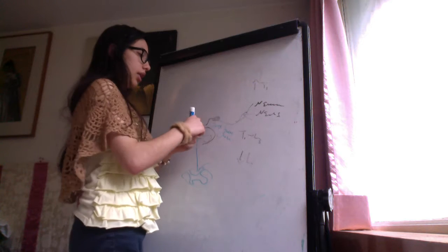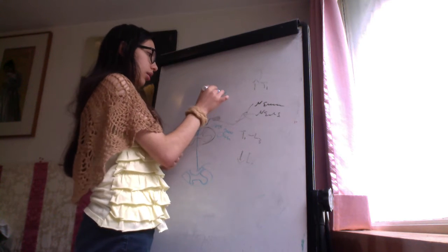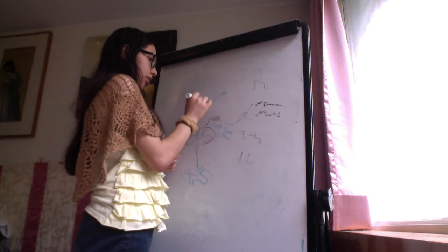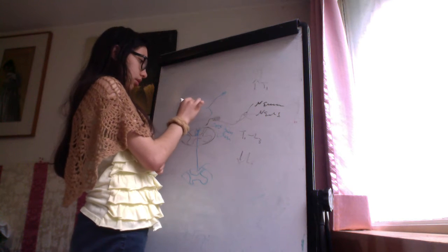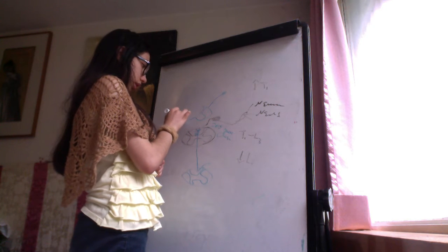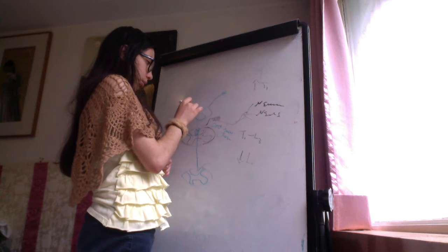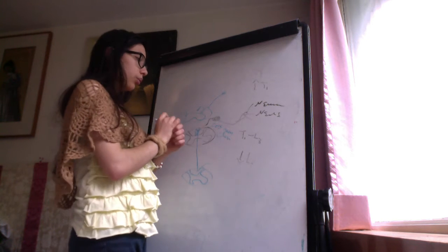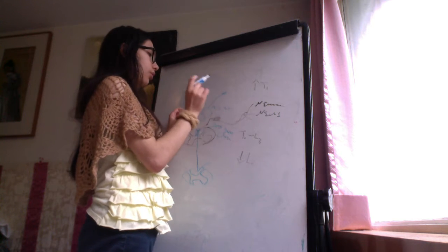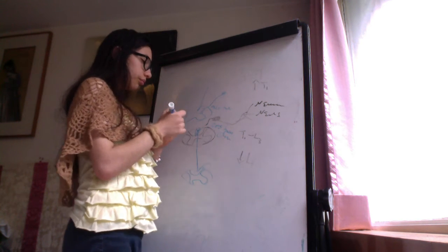For neurons above T1, they will enter the spinal cord at the cuneatus fascicle and will synapse on the accessory nucleus of cuneatus, and then ascend.